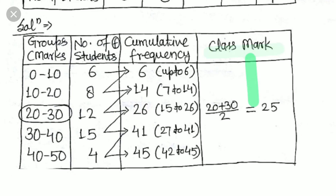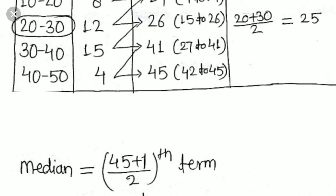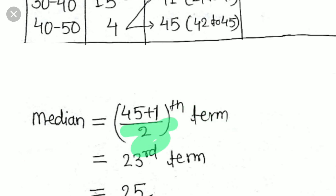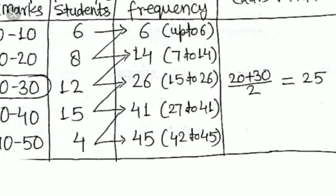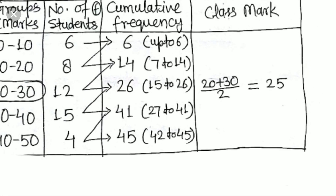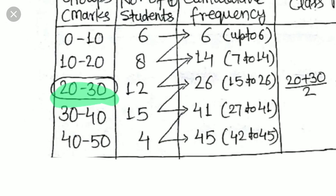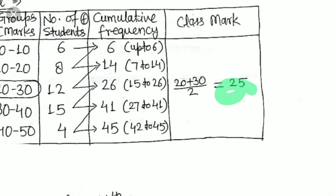The total number of terms is 45, which is odd, so the median is the (45+1)/2 = 23rd term. From the cumulative frequency table, the 23rd term falls in the class 20–30 (cumulative frequency goes from 14 to 26). This is the median class. The class mark is (20 + 30) / 2 = 25. So the median is 25.